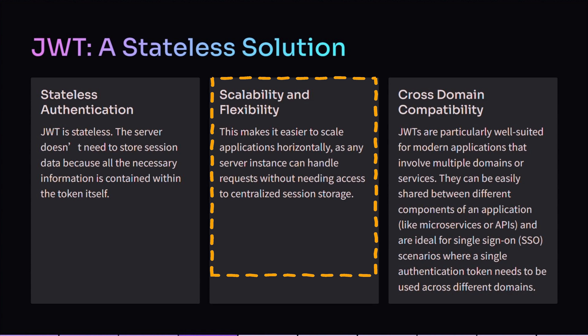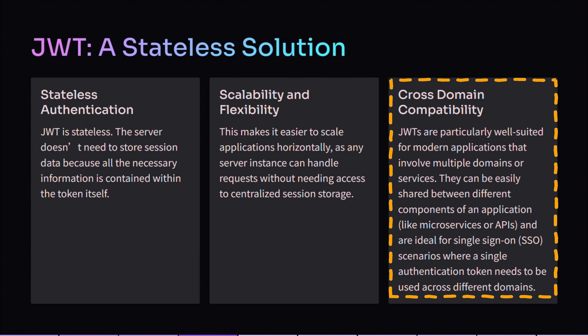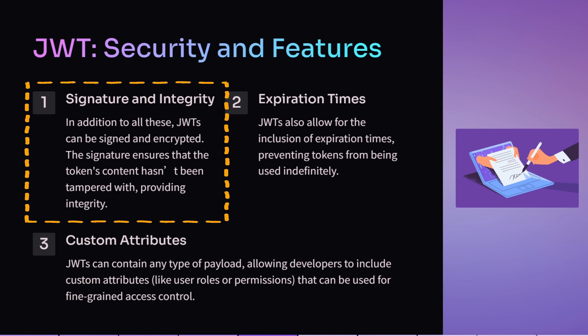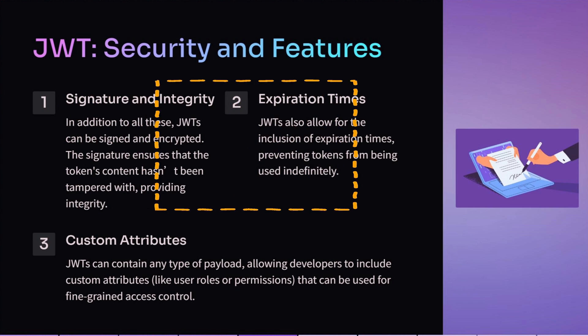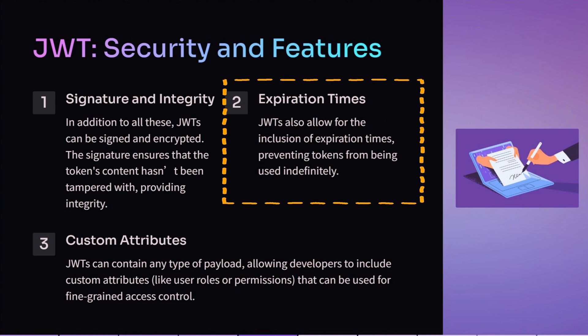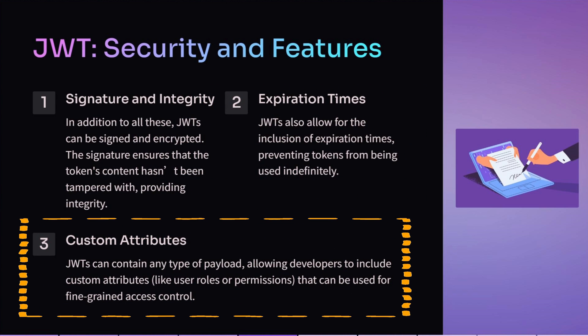The server can then verify the token without needing to look up any session data. This makes it easier to scale applications horizontally, as any server instance can handle requests without needing access to any centralized session storage. JWTs are particularly well suited for modern applications that involve multiple domains or services. They can be easily shared between different components of an application like microservices or APIs, and are ideal for single sign-on scenarios where a single authentication token needs to be used across different domains. JWTs can also be signed and encrypted, and allow for the inclusion of expiration times that prevent the token from being used indefinitely. JWTs can contain any type of payload, allowing developers to include custom attributes like user roles or permissions for fine-grained access control.